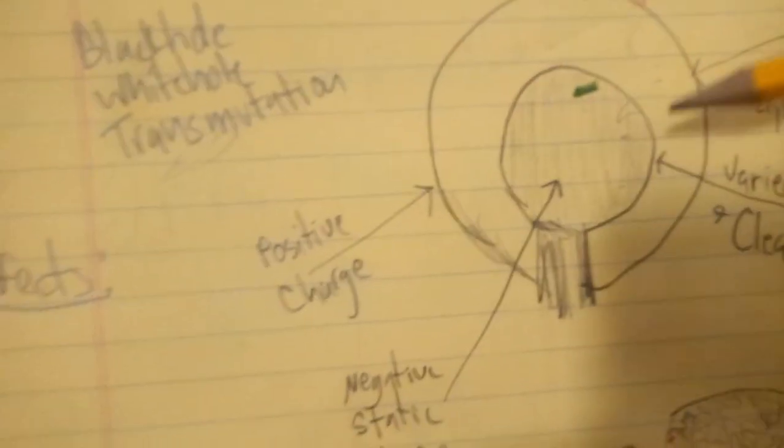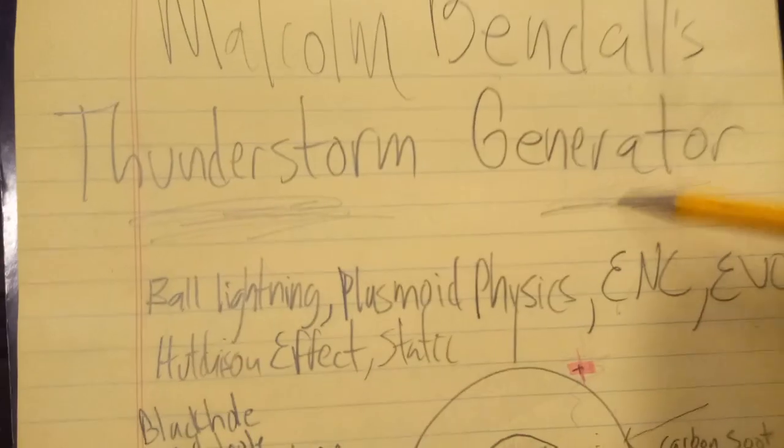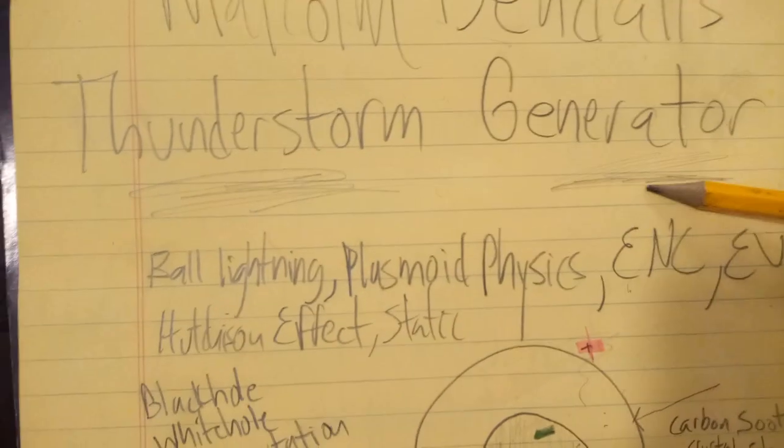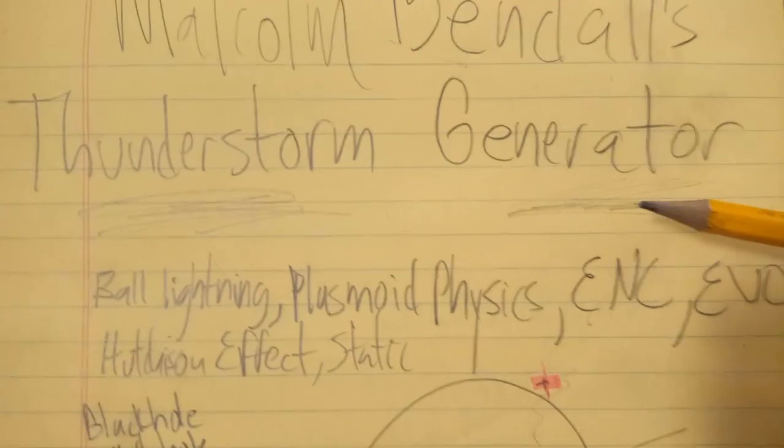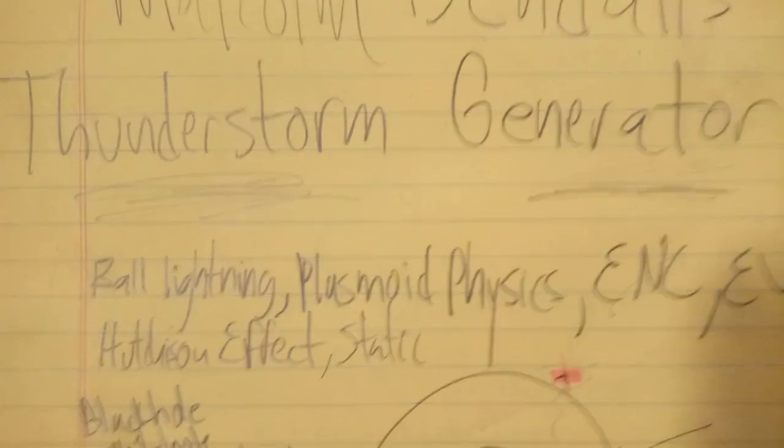But first, let me explain to you what this machine is. It's called a thunderstorm generator, which is a very glorified kind of way of saying it's a boosted up Van de Graaff generator, essentially.